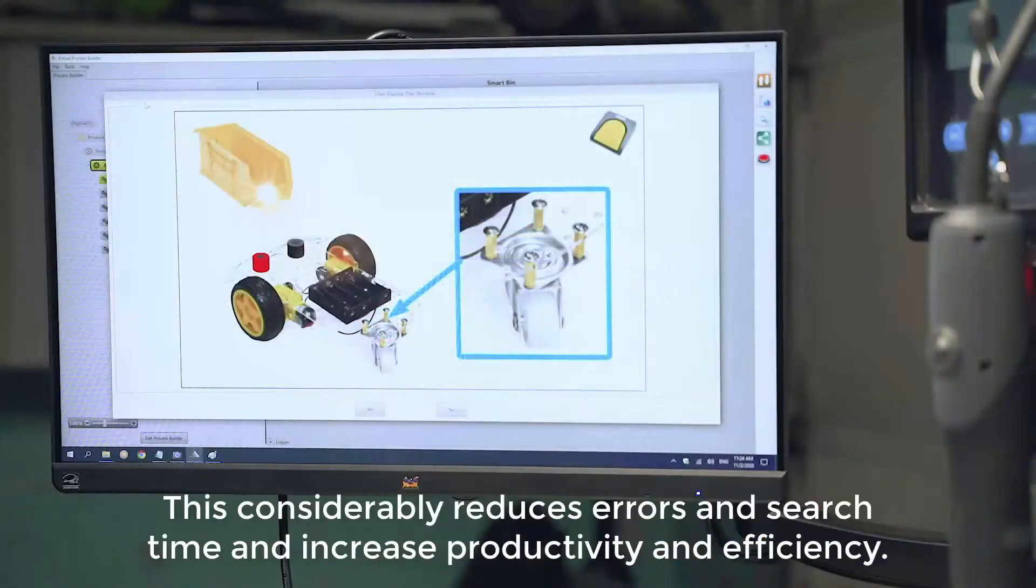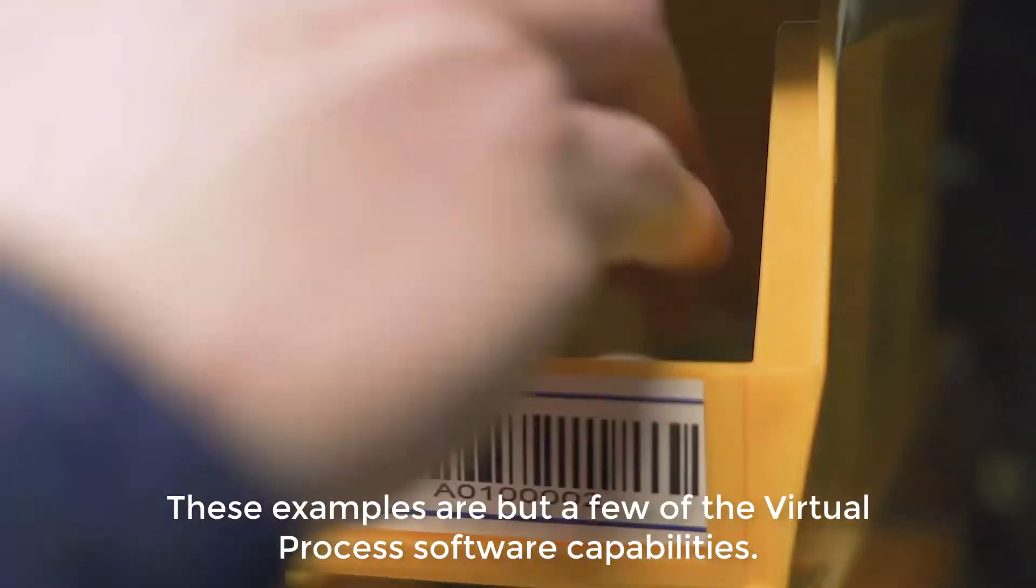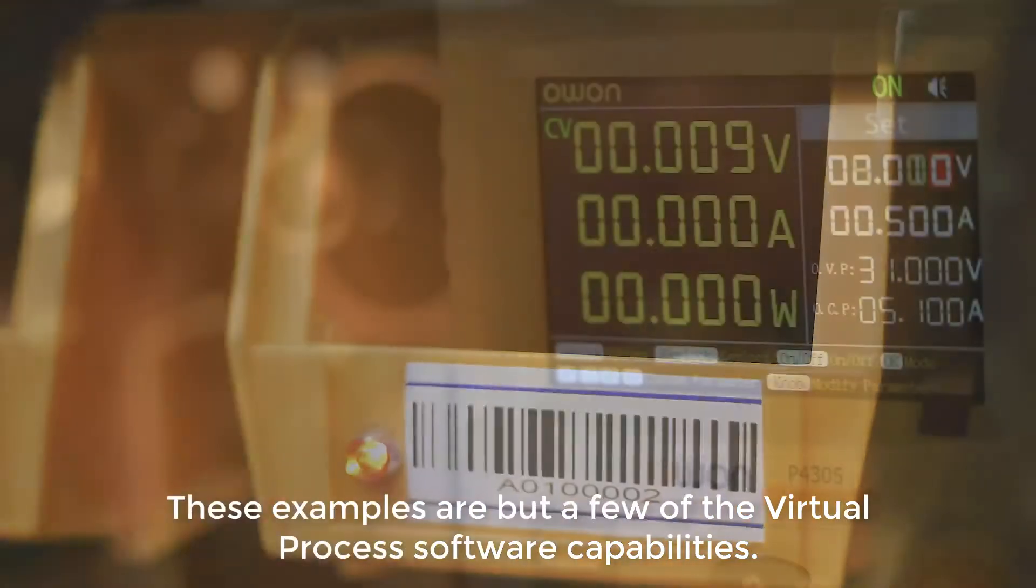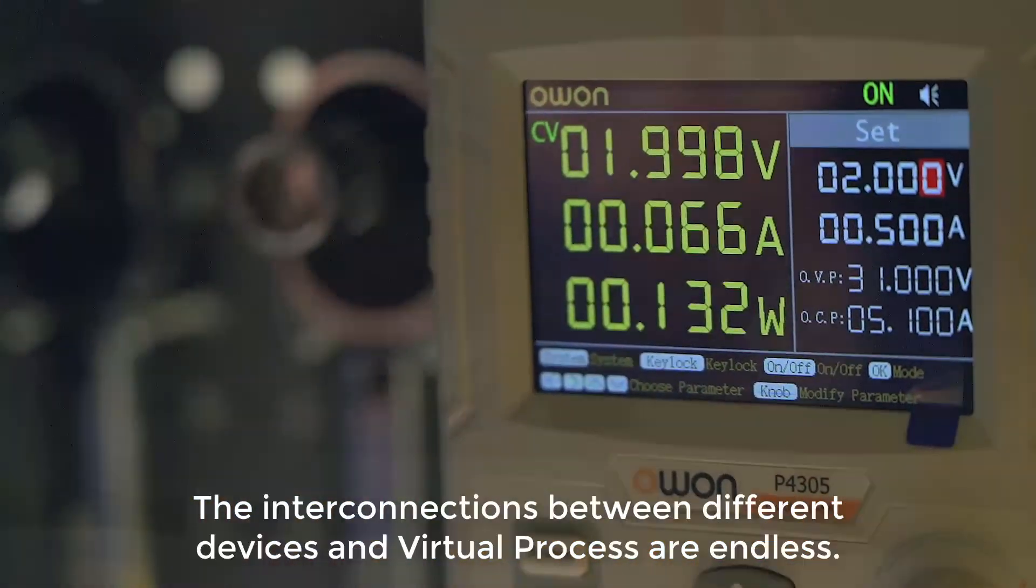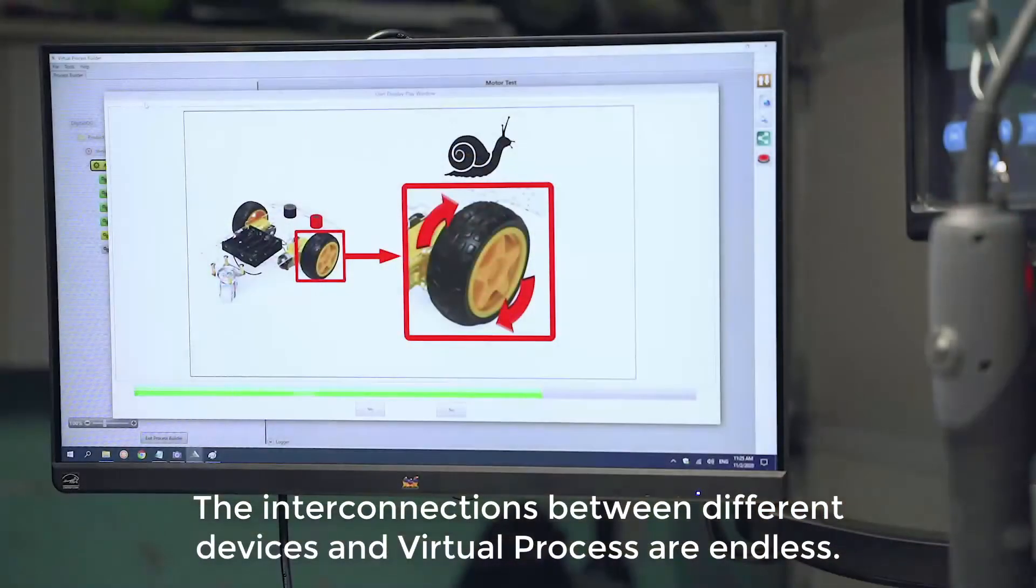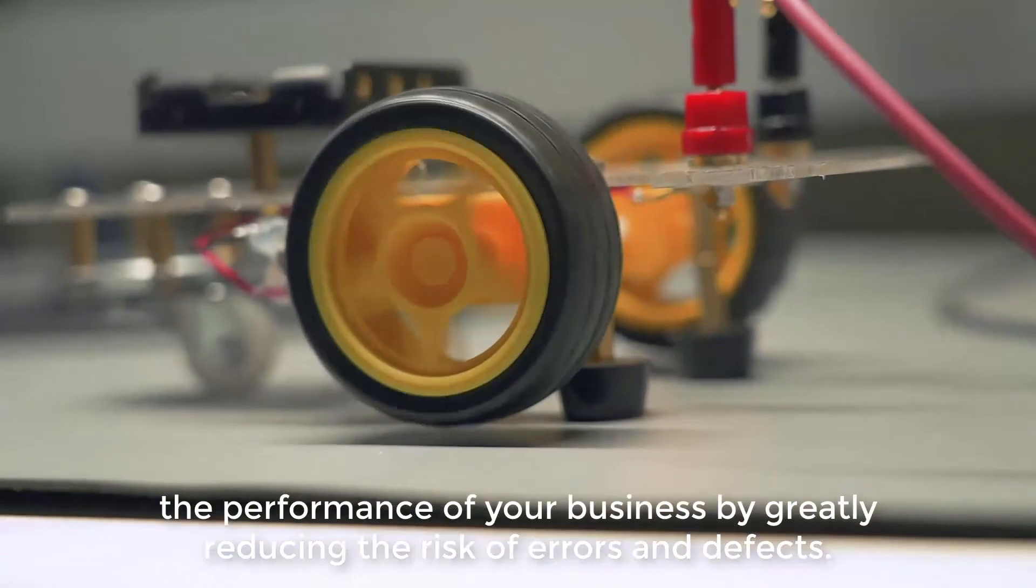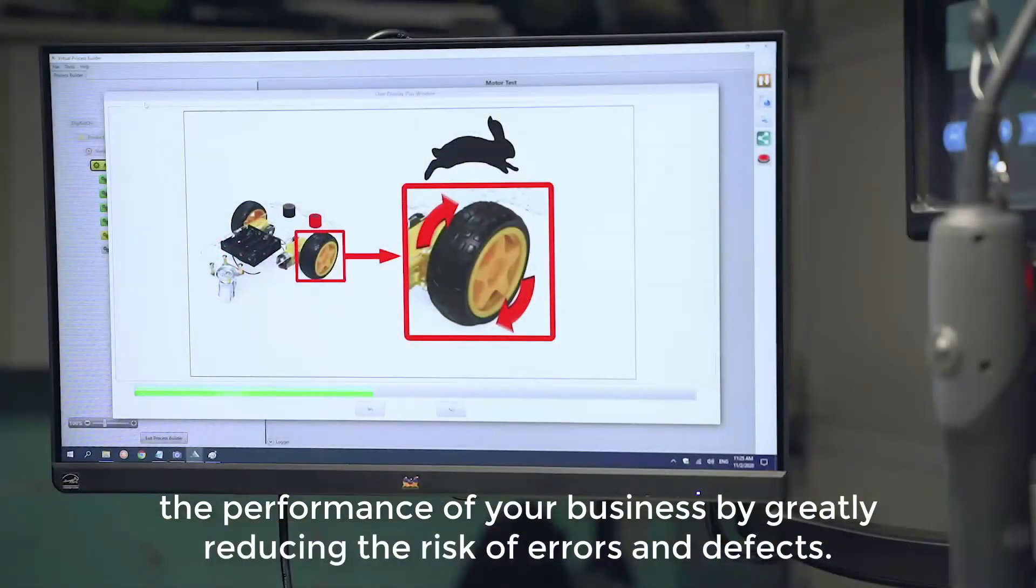This considerably reduces errors in search time and increases productivity and efficiency. These examples are but a few of the Virtual Process software capabilities. The interconnections between different devices and Virtual Process are endless. Creating a collaborative environment will allow you to optimize the performance of your business by greatly reducing the risk of errors and defects.